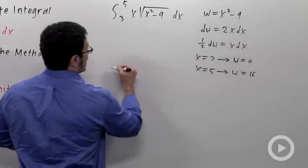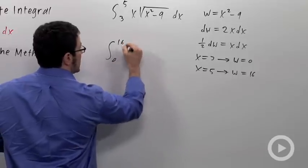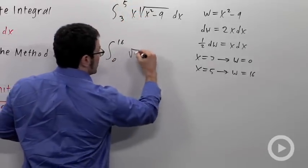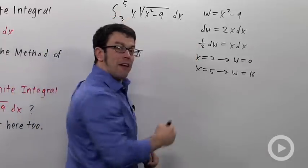So my new integral is going to be the integral from 0 to 16. The square root of x squared minus 9, that'll be root w. The x dx, 1 half dw.